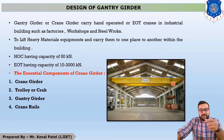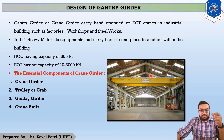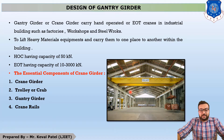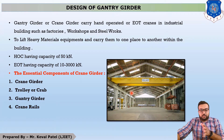Now, this crane girder is supported on which system? This crane girder is basically supported on a gantry girder. You can see that this steel section is called as your gantry girder. In the last lecture, we discussed the components of the crane girder.